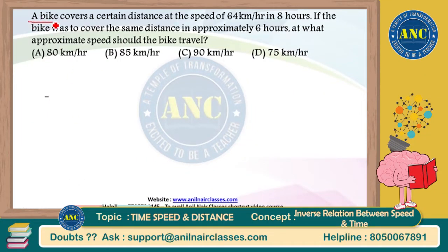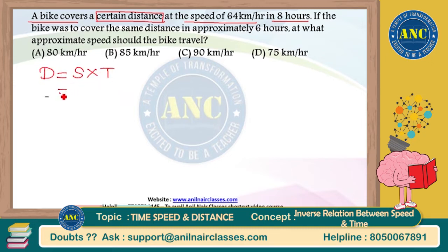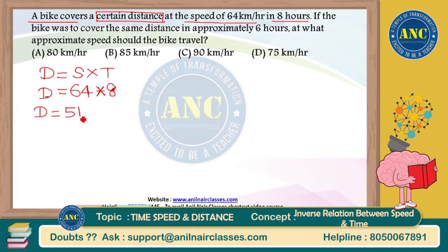A bike covers a certain distance — so distance is constant — at a speed of 64 kilometers per hour in eight hours. Distance equals speed into time, so distance is 64 into 8. 64 is 2 to the power 6, and 8 is 2 to the power 3, so 2 to the power 9, which is 512 kilometers.